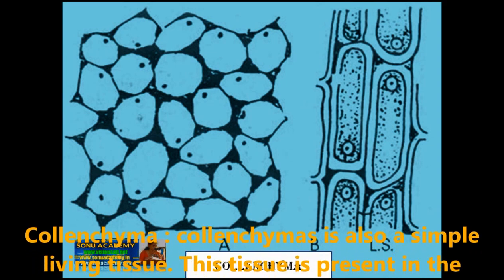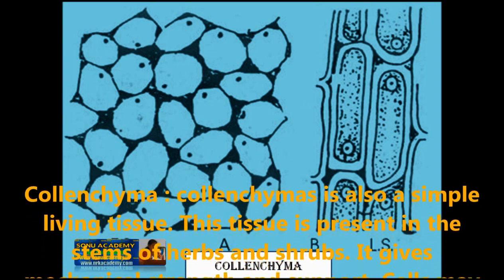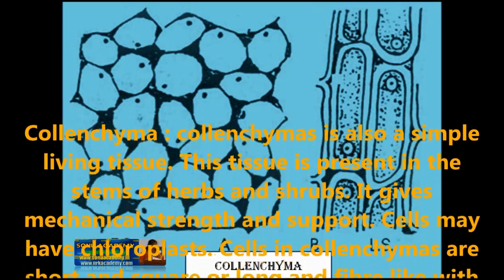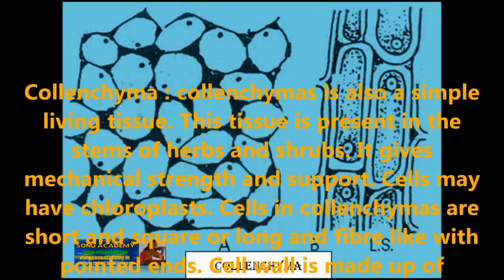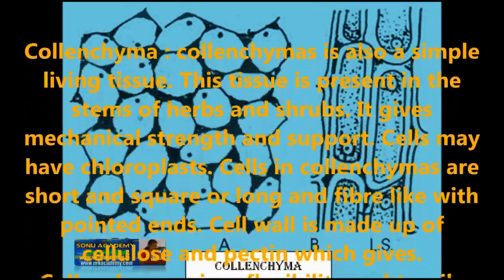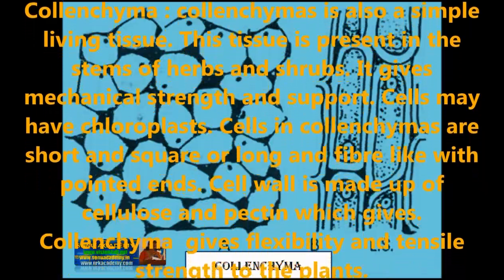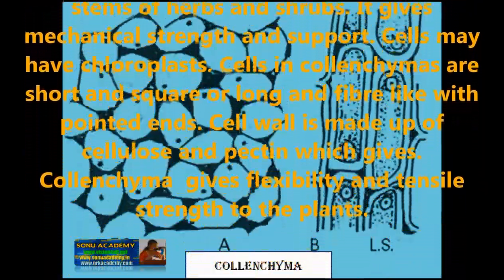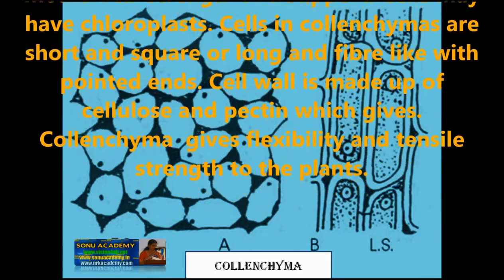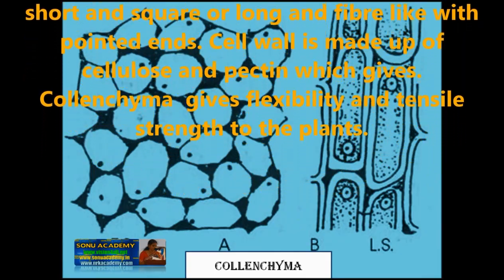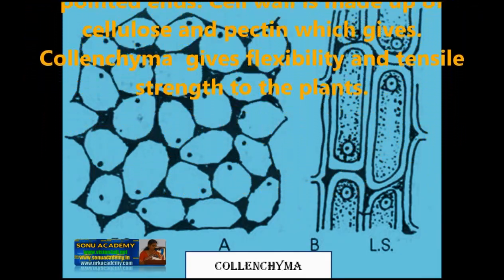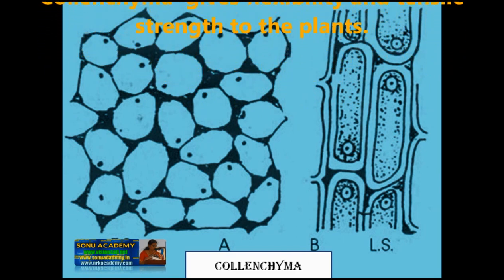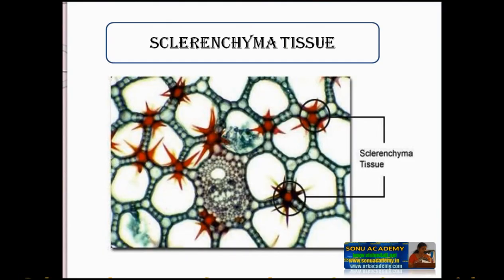Collenchyma is also a simple living tissue. This tissue is present in the stems of herbs and shrubs. Cells may have chloroplasts. Cells in collenchyma are short and square or long and fiber-like with pointed ends. Cell wall is made up of cellulose and pectin, which gives strength to the tissue. Collenchyma gives flexibility and tensile strength to the plants.